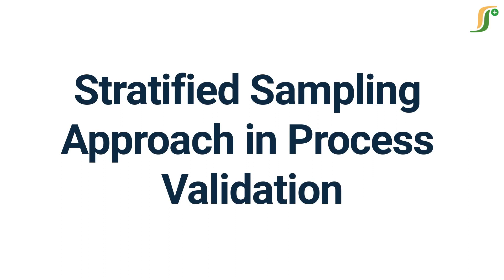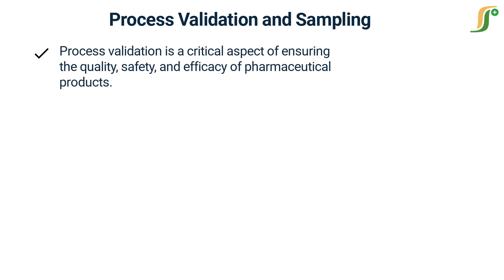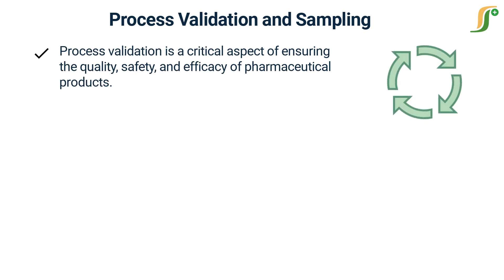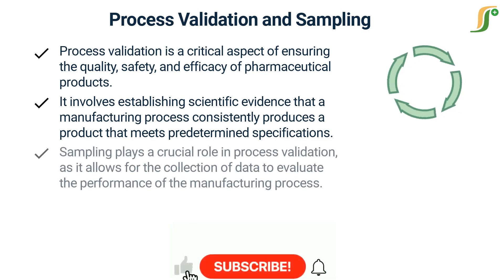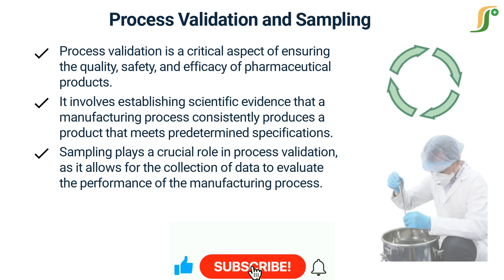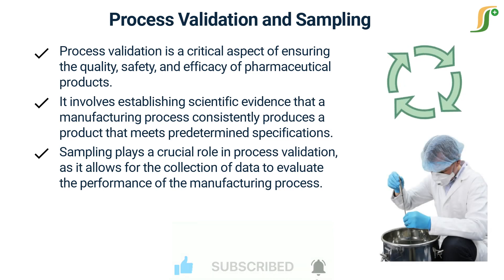Welcome to a new learning video on pharma guideline. Today we will discuss the stratified sampling approach and process validation. Process validation is a critical aspect of ensuring the quality, safety, and efficacy of pharmaceutical products. It involves establishing scientific evidence that a manufacturing process consistently produces a product that meets predetermined specifications. Sampling plays a crucial role in process validation as it allows for the collection of data to evaluate the performance of the manufacturing process.